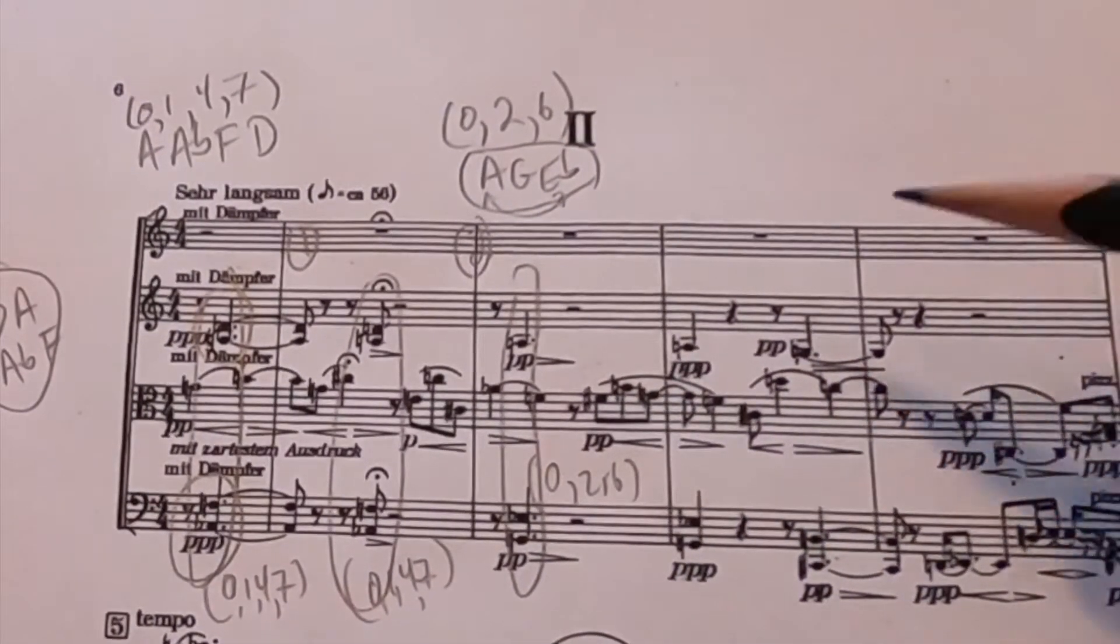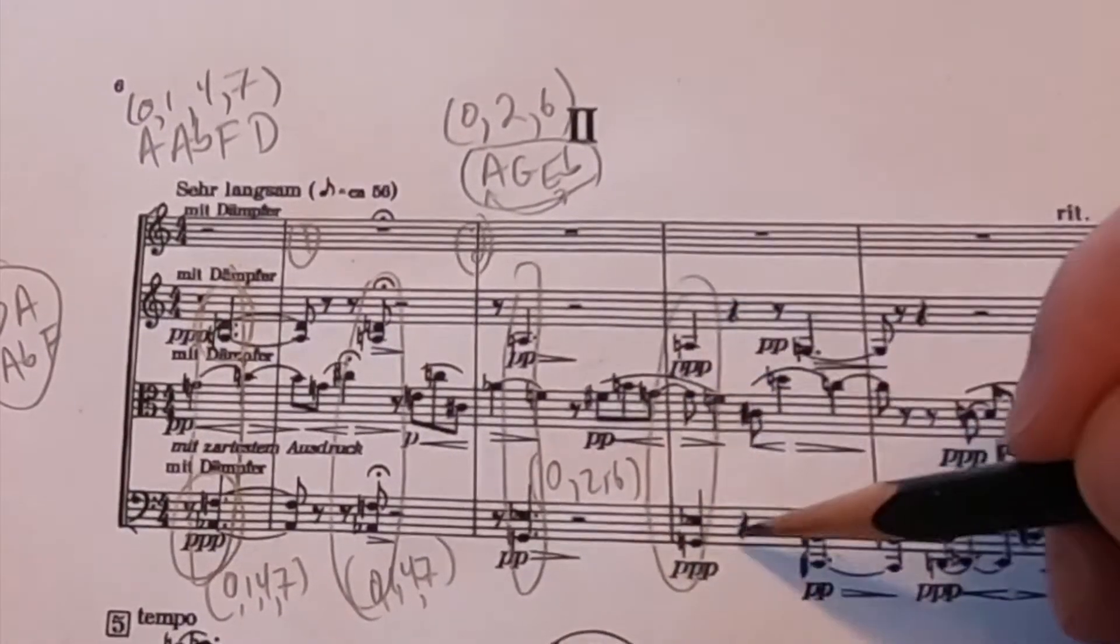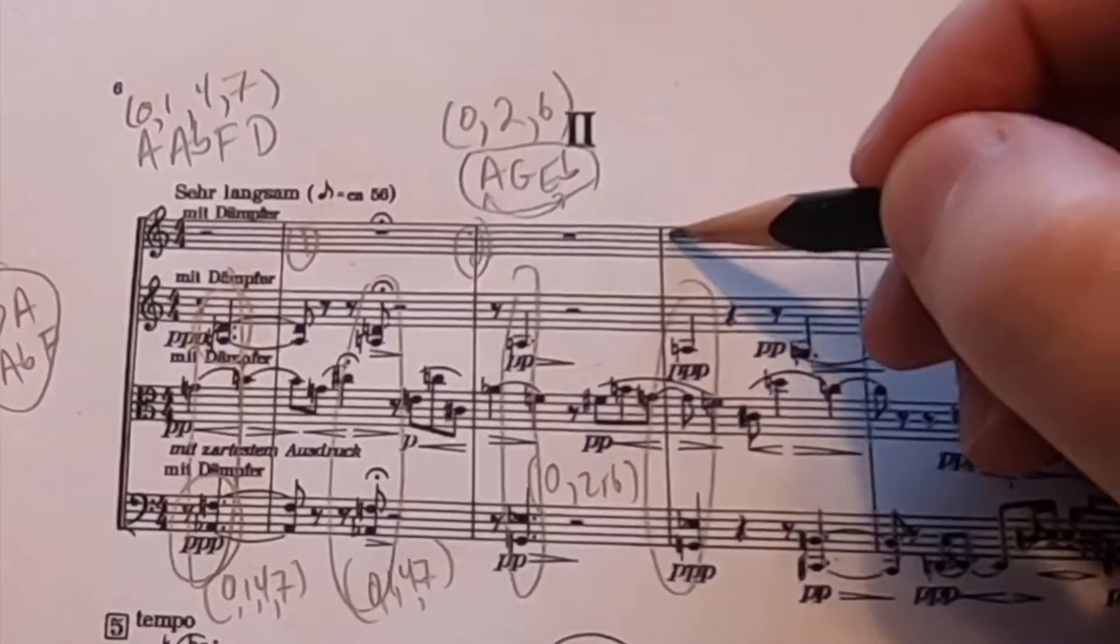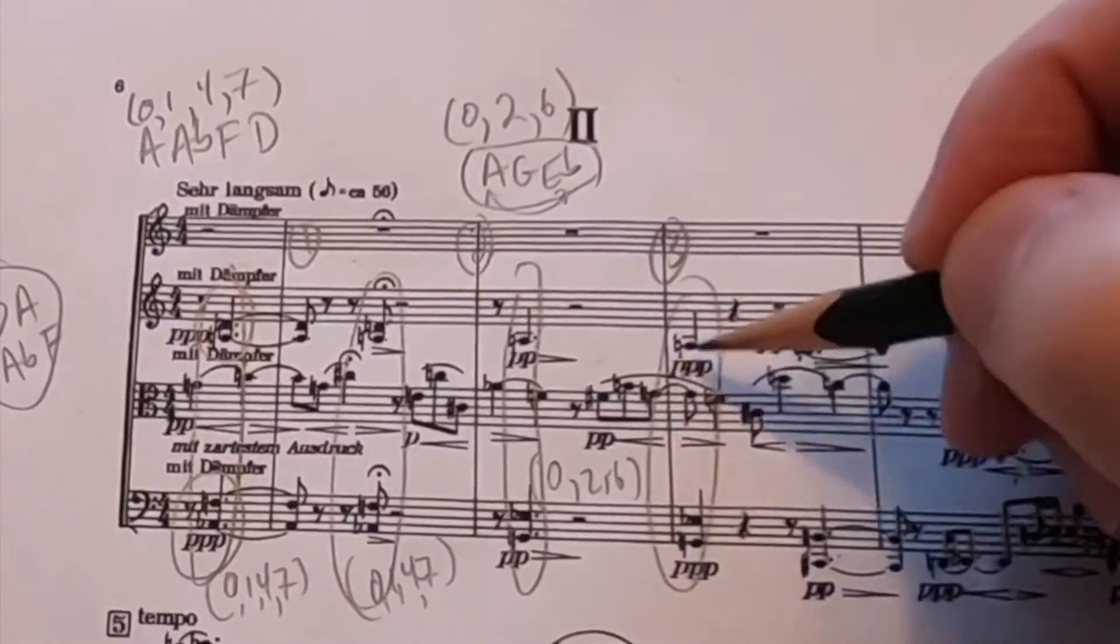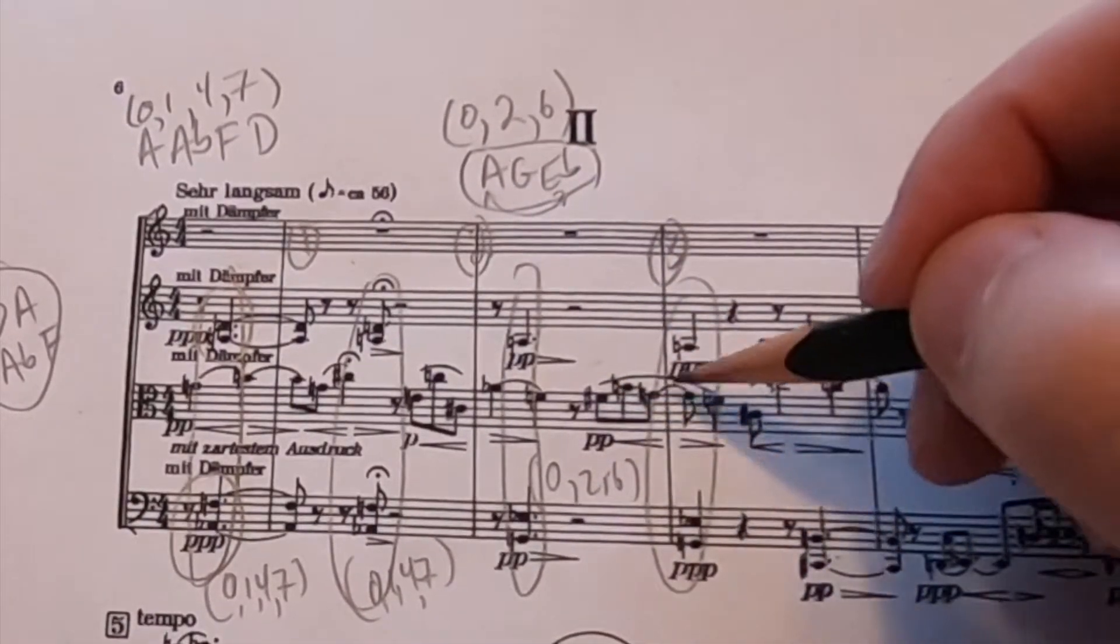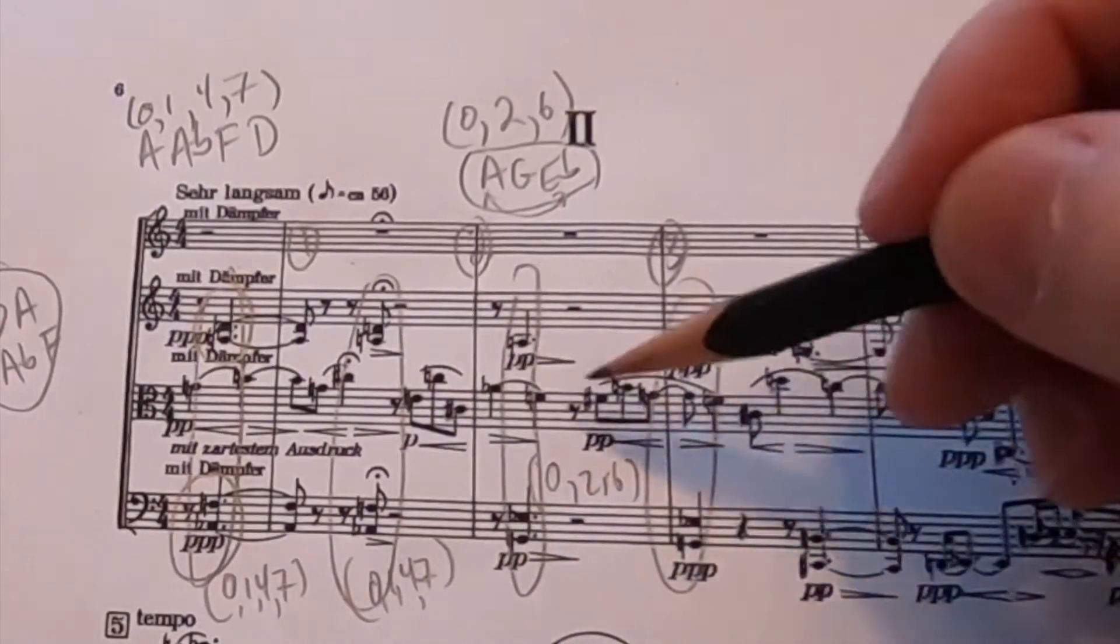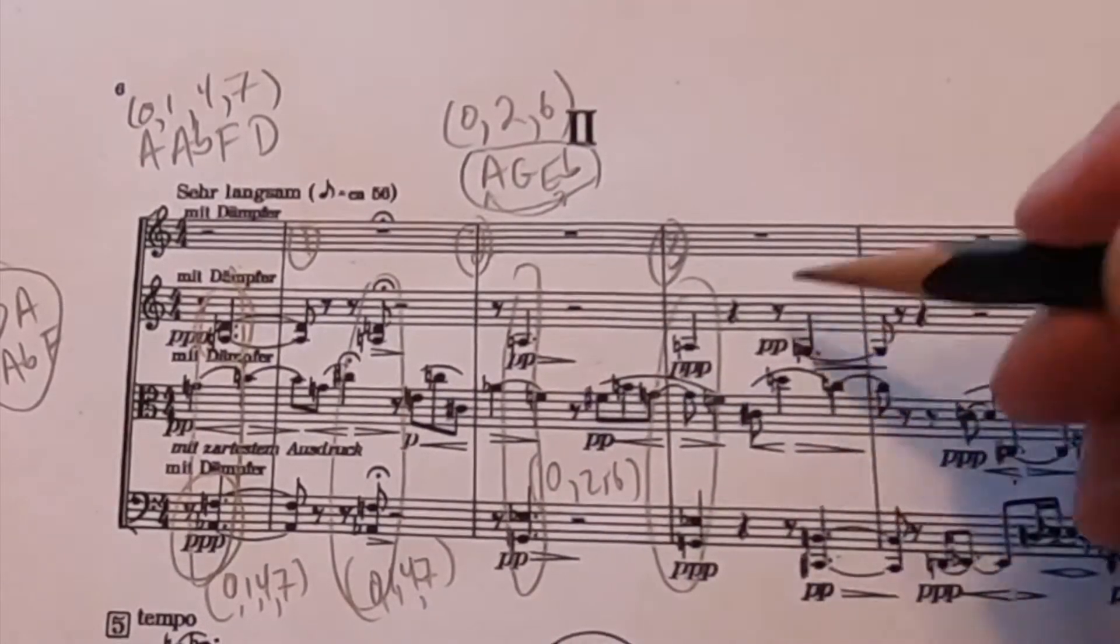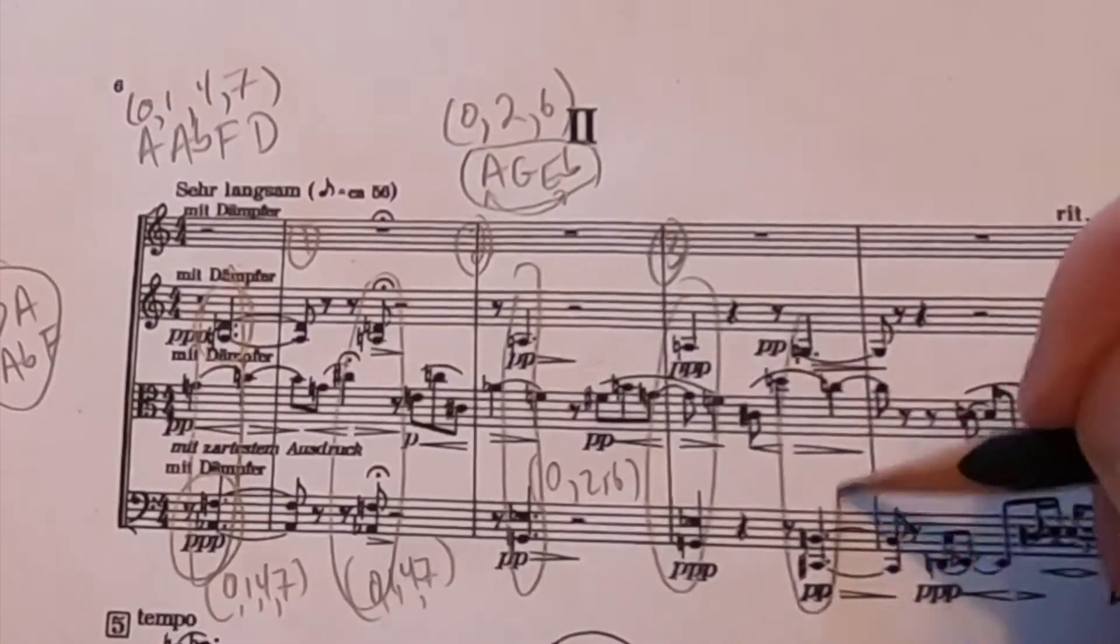Now, if we look, continue on, we have the same sonority that occurs on the downbeat of the next bar in bar number three. And this is, again, we're not considering the viola. The viola has its own melody. It's a separate issue. Now let's continue looking at just what the second violin and cello are doing.